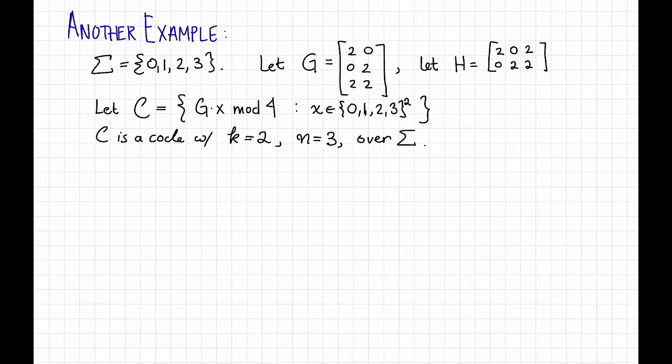Let's try to do the same sort of thing we did in the previous video with the Hamming code with this code. So notice that for this H, we have H times G is equal to 8, 4, 4, 8, which is equal to 0, 0, 0, 0 mod 4.